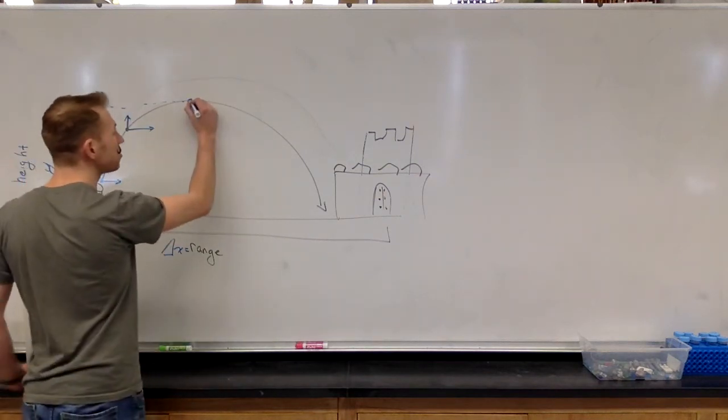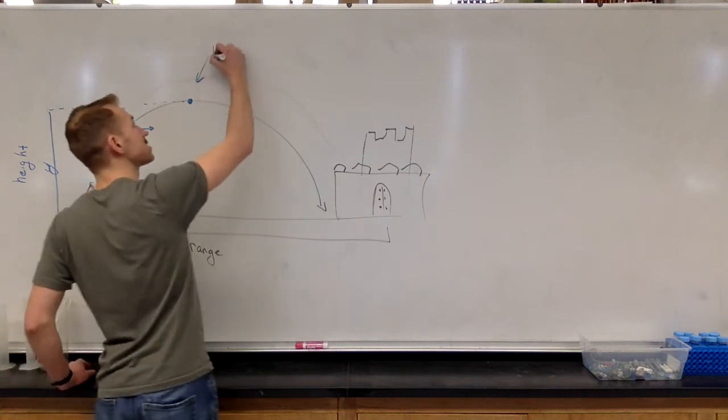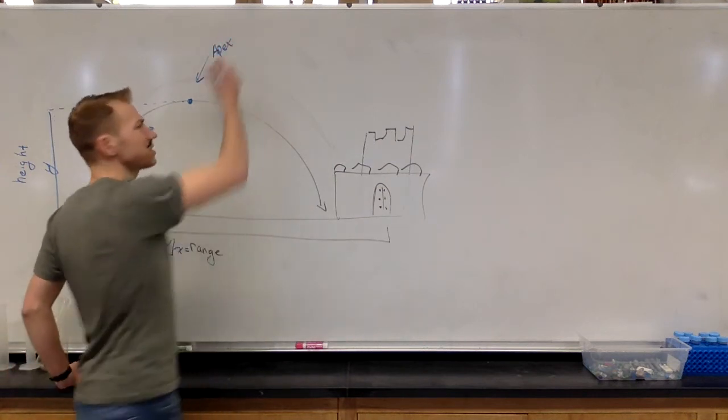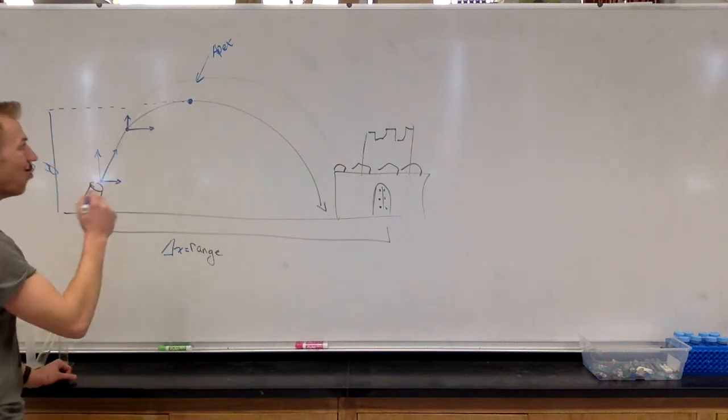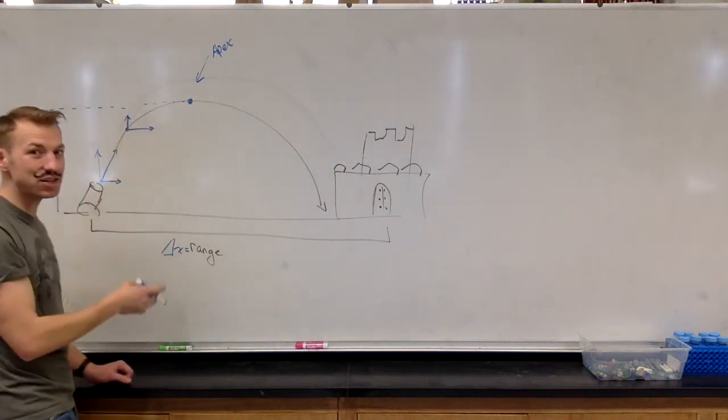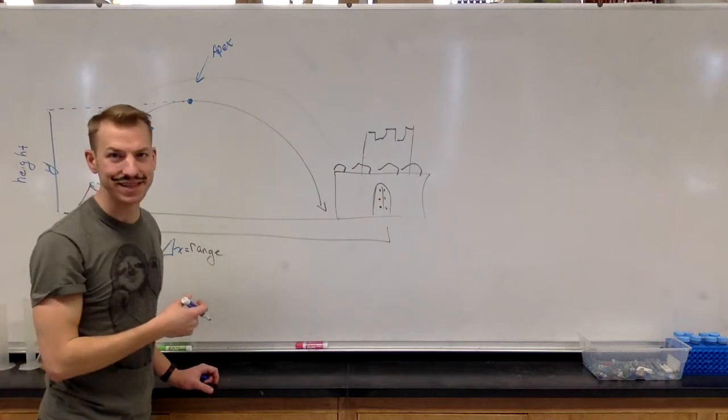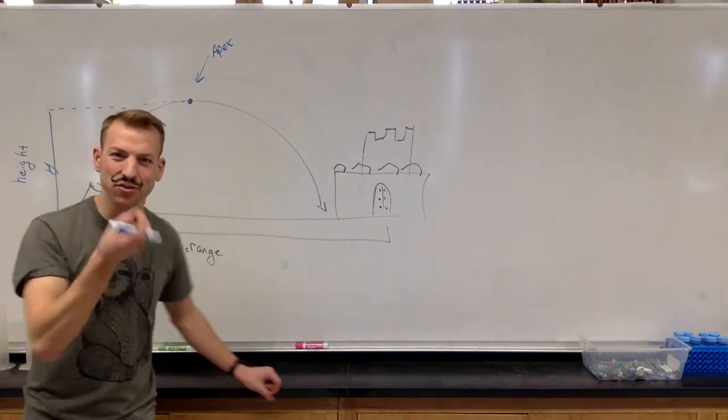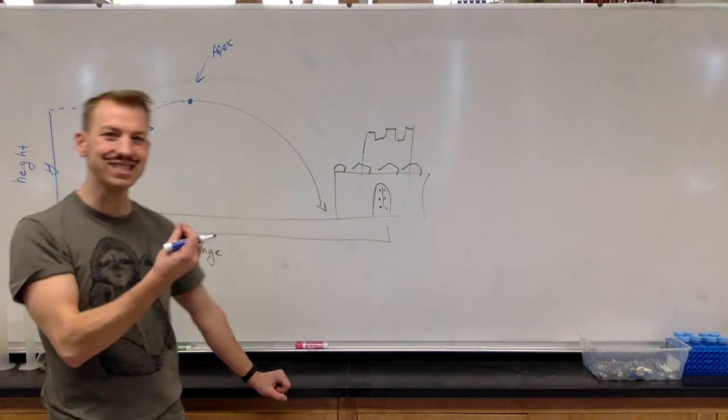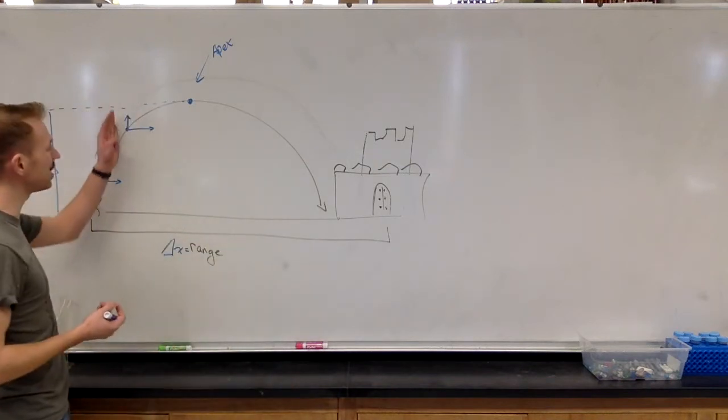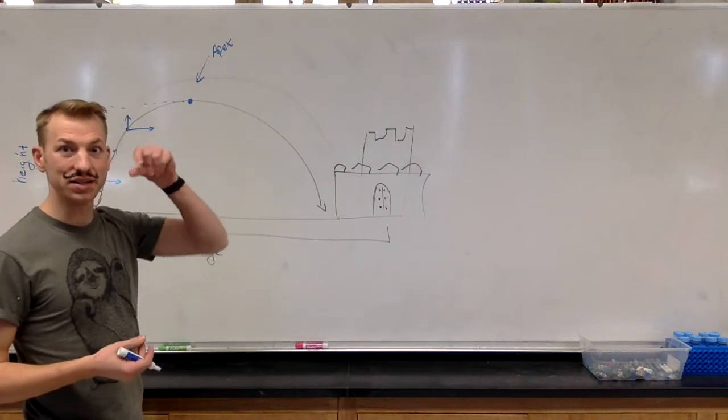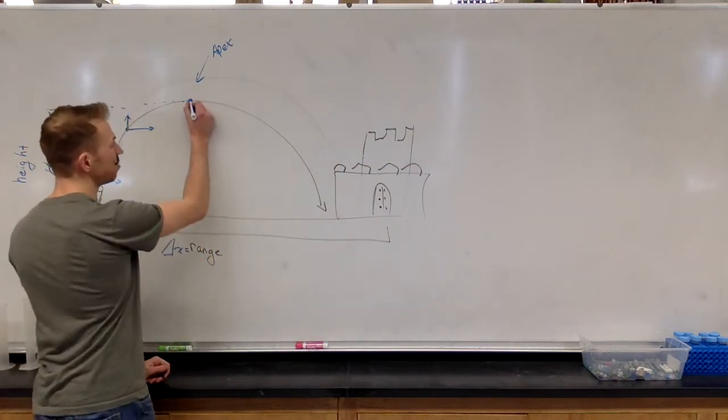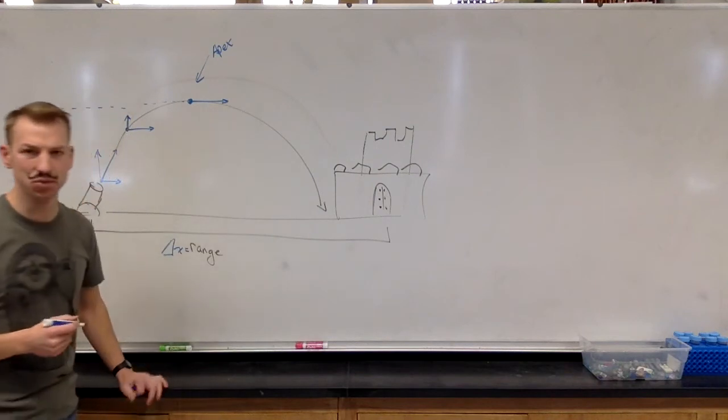At this topmost point, we call this the apex. Apex just means top or highest or most. And this is the apex. When it is at the apex, it actually has no vertical velocity at all. It hangs in the air for just a moment, just an instant, where the original velocity has all been changed due to gravity until it's zero. So it's not moving up or it's not moving down, but in the horizontal direction, it is still moving.